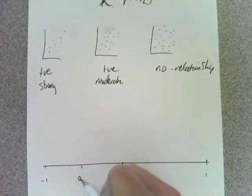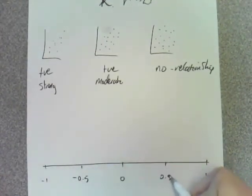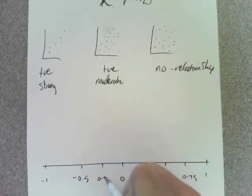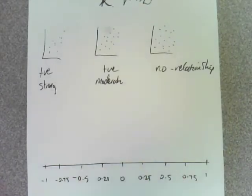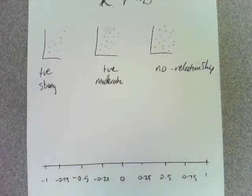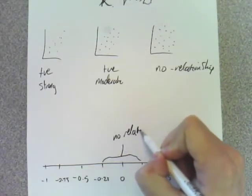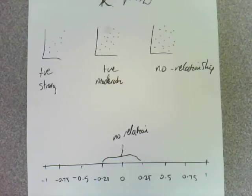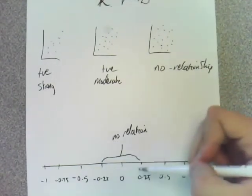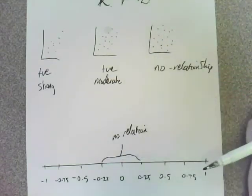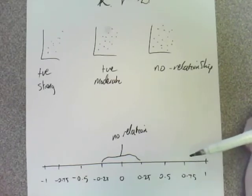So this only ever is between negative 1 and 1. Any area in between here is no relation. So if there's no relation, you would say that's around somewhere between — that one's really, really no relation. So I would say that that was 0. The R value, the Pearson's product moment correlation coefficient, R, is 0.